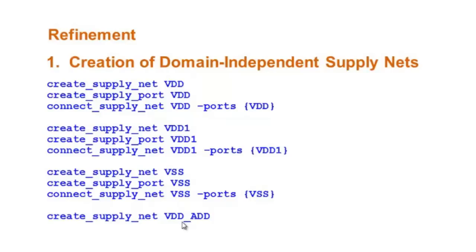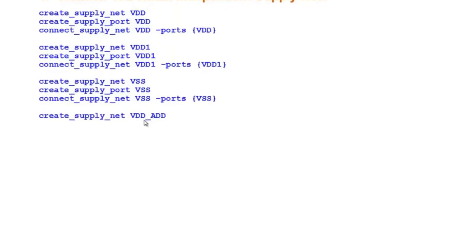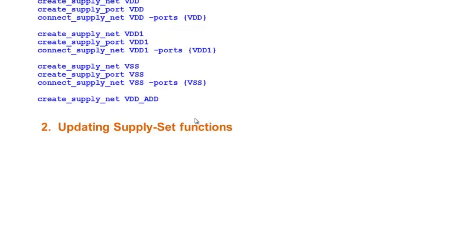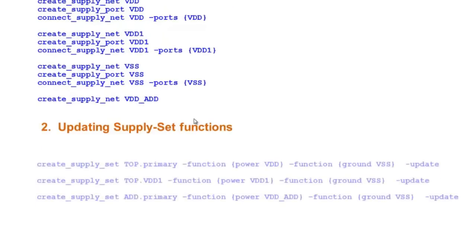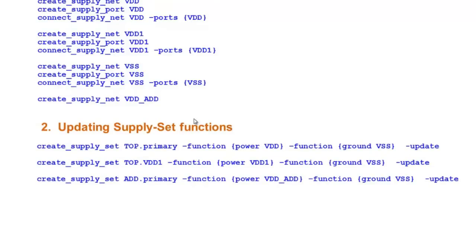This is an internal supply which is connected to the output of the power switch. The next step is to update the SupplySet functions. We have learnt this already.